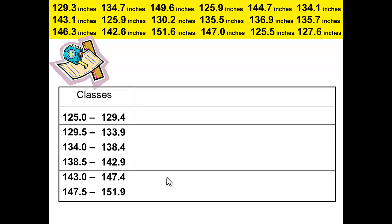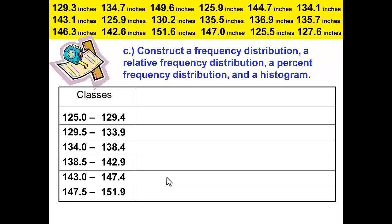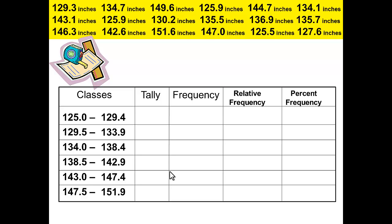Now we're ready to do part C which asks us to construct a frequency distribution, a relative frequency distribution, a percent frequency distribution, and a histogram. We have done this in previous examples, so I'm going to cover this relatively quickly in this video. First we want to create the columns and label those. Since we have our classes, we can do our tally. The tally is done, we can turn the tally marks into frequency: 5, 1, 5, 1, 4, 2.